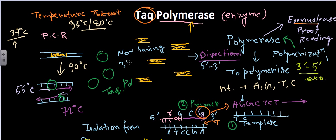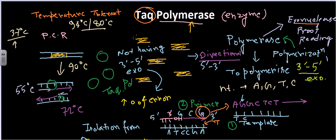Because Taq polymerase lacks 3' to 5' exonuclease activity, whenever it makes a mistake during polymerization it cannot remedy or reverse that mistake. For example, if it puts a wrong G instead of T, it remains. So there is a higher degree of error, but the error rate is still fairly low — about 10⁻⁴ to 10⁻⁵ per nucleotide.